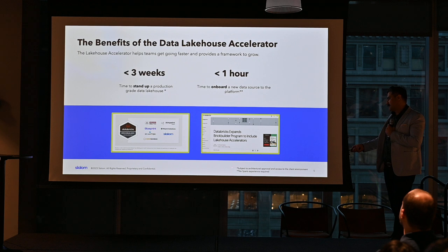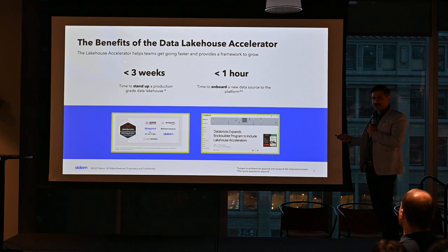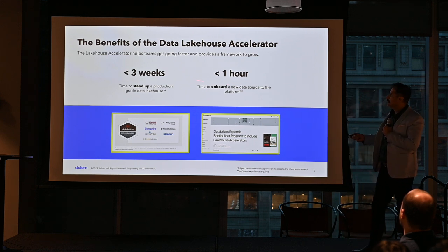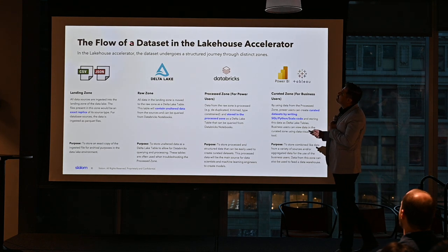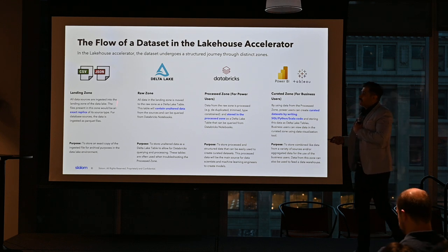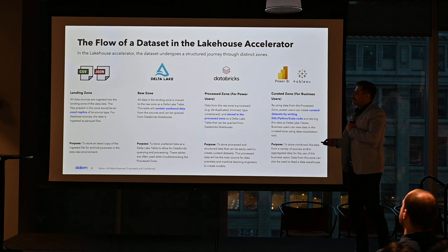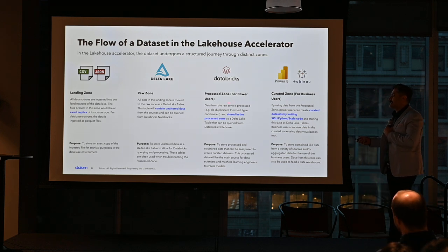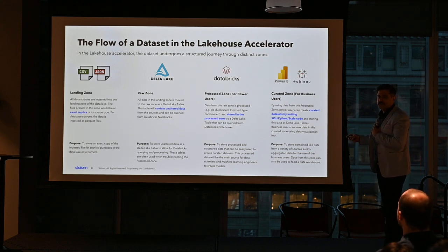There are steps in the Lakehouse accelerator that are typical for those who already know Databricks and the Medallion architecture. Everything starts with the landing zone — an exact replica of all your data sources. Then it goes to the raw zone, then to the process zone, which Databricks refers to as the silver zone, and then to the curated zone, which through Medallion architecture terminology is called the gold zone. There's also a bronze layer before that.